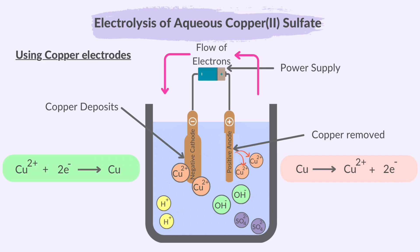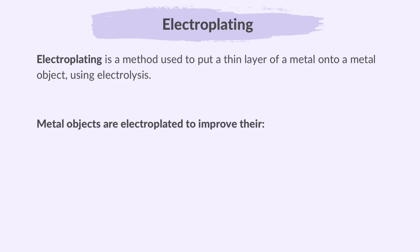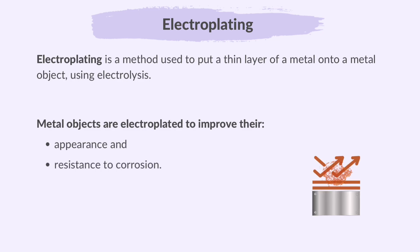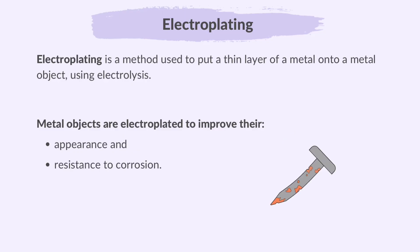This process is used to electroplate other metals with copper. Electroplating is a method used to put a thin layer of a metal onto a metal object using electrolysis — it's used to plate or coat one metal with another. Metal objects are electroplated to improve their appearance and resistance to corrosion. This process is commonly used to enhance the appearance of objects such as jewellery, providing a shiny or decorative finish. Additionally, the plated layer acts as a protective barrier, reducing the risk of corrosion or rusting, thereby extending the lifespan of the metal object.